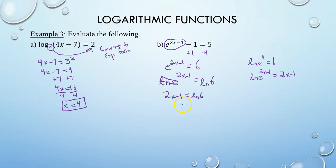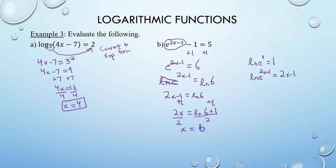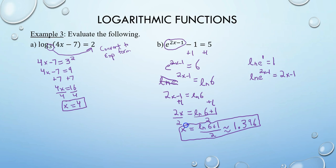Our goal is to isolate x by adding 1 to both sides. You cannot combine the natural log of 6 plus 1 — these are separate terms: a log term and a plus 1 term. Dividing both sides by 2 gives x equals (natural log of 6 plus 1) divided by 2. This is an exact answer, whereas an approximate answer using a calculator, rounded to three decimal places, would be 1.396. You have an exact answer versus an approximate answer, and usually they'll tell you which one they want.